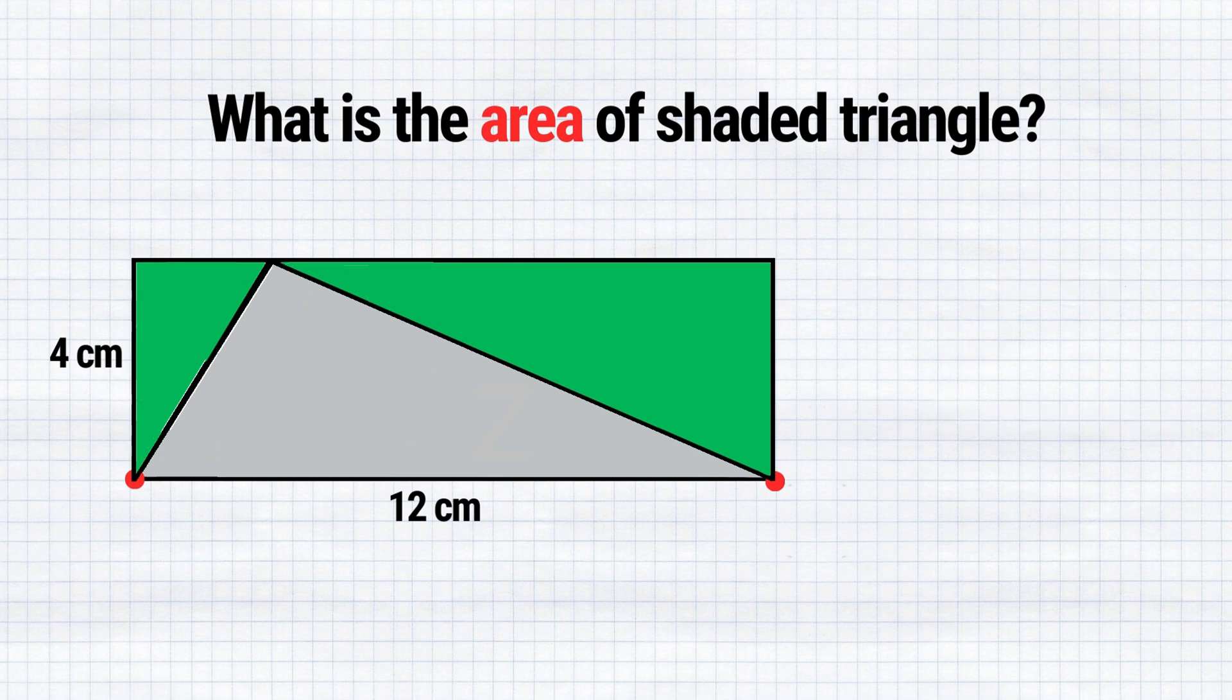Another way to solve this problem is to draw a line straight from the top of your triangle to the bottom. This line represents the height of our triangle, which is equivalent to the height of our rectangle, both measuring 4 centimeters.